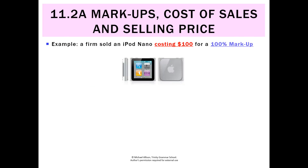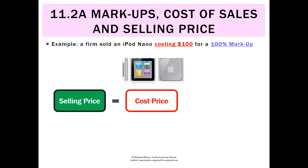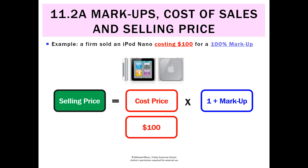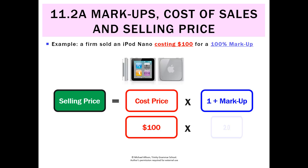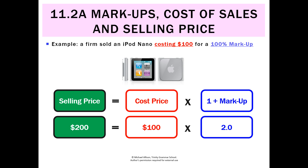Let's go through some examples where we might need to calculate either the markup, the cost price, or the selling price. A firm sold an iPod Nano that cost $100 at a 100% markup. We don't know the selling price, so to find it we do: cost price times (1 plus the markup). That's $100 times (1 plus 1.0), which equals $100 times 2, giving a selling price of $200.